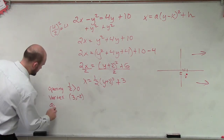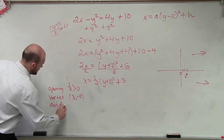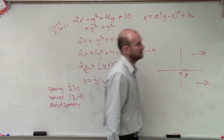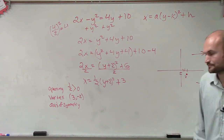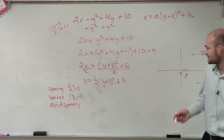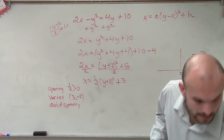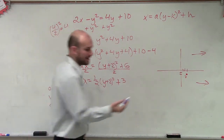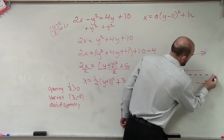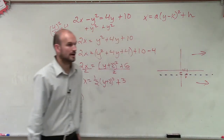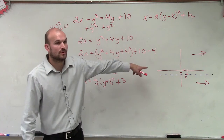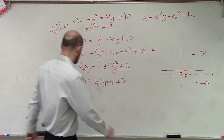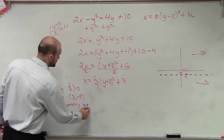And then we have axis of symmetry. Your axis of symmetry has to go through your vertex, right? And therefore, what is the equation of that line? It goes through negative 2. The y value is equal to negative 2. So axis of symmetry: y equals negative 2.